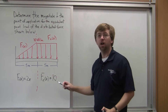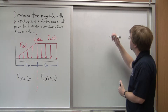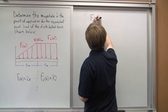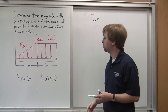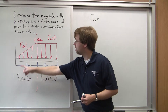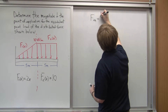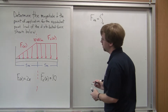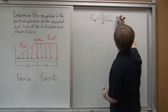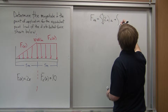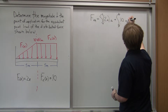I've got the force function for each of those two sections. Now I can move on and solve for the magnitude of my equivalent point load. The magnitude is going to be the integral under this, and to get the overall integral, we simply add up the integral of f1 from zero to five, and f2 from five out to ten. That's the integral from zero to five of 2x dx, plus the integral from five to ten of 10 dx.